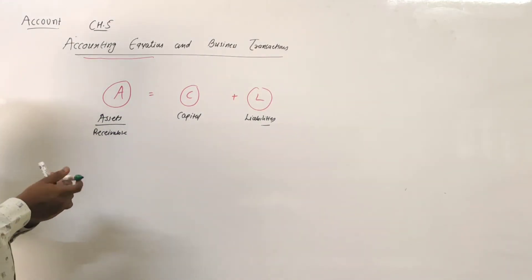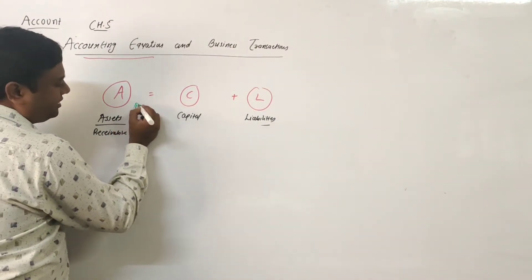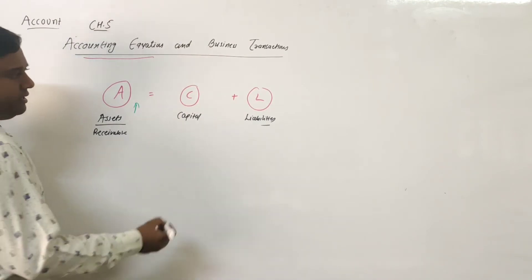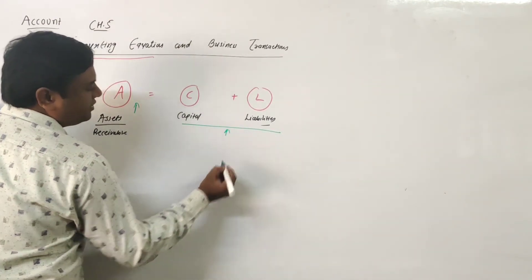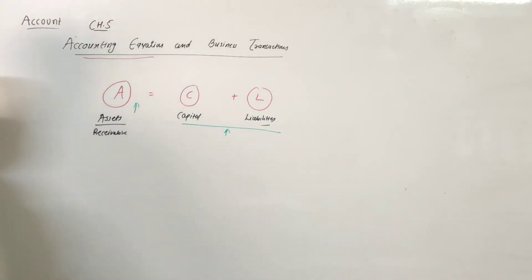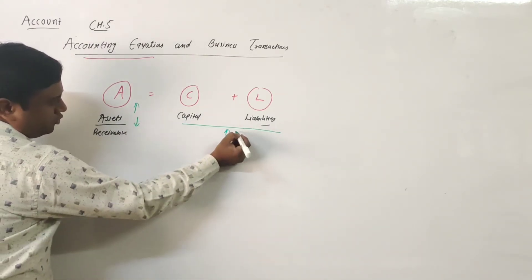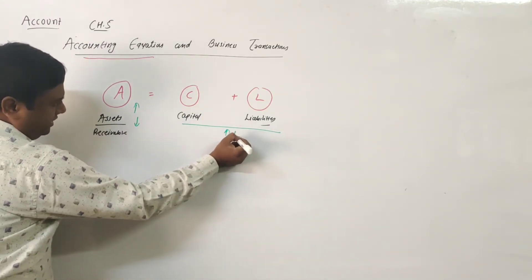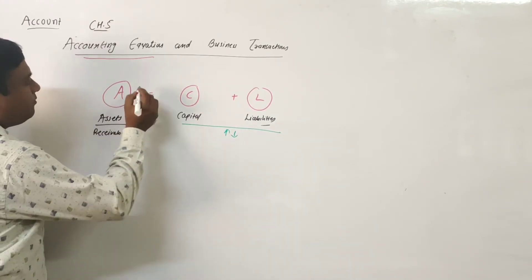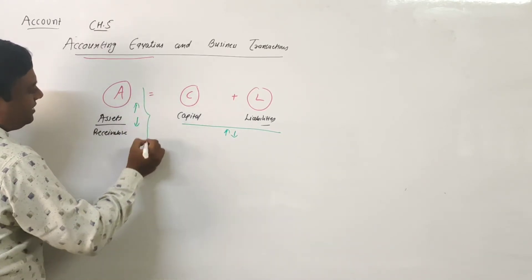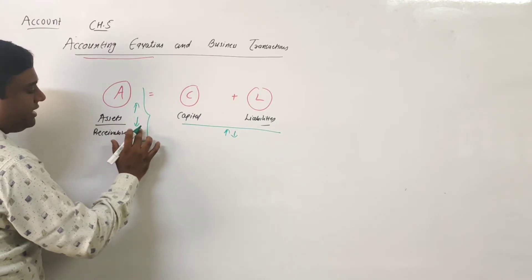If there is any transaction and assets increase, then capital or liabilities also increase. If assets decrease, then capital or liabilities decrease. Or, a single effect: assets increase and assets decrease.